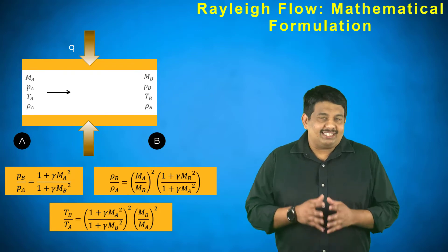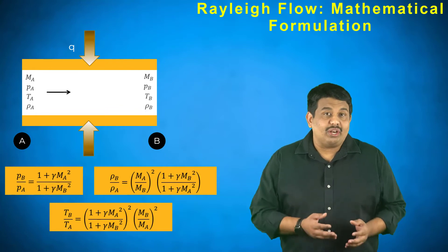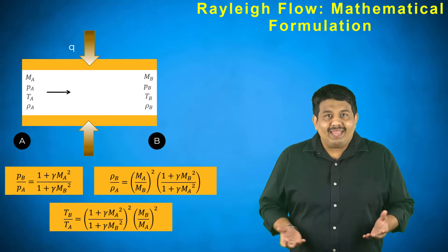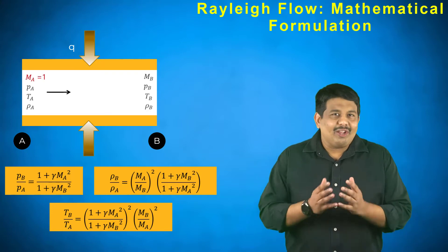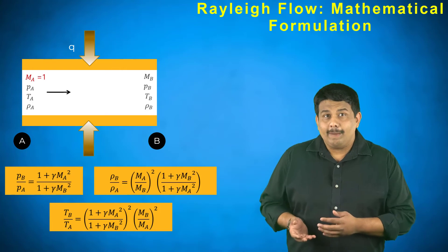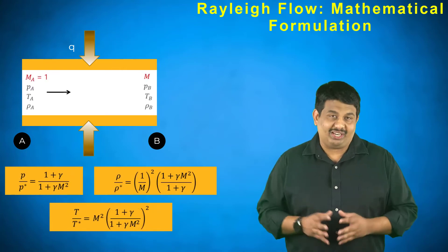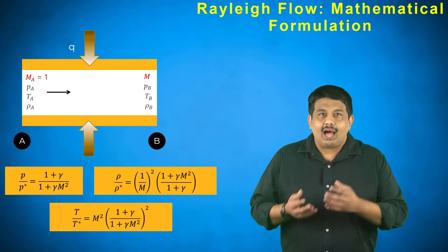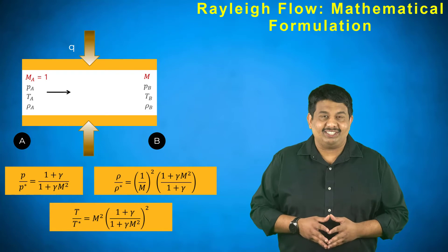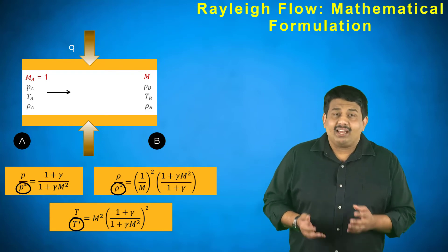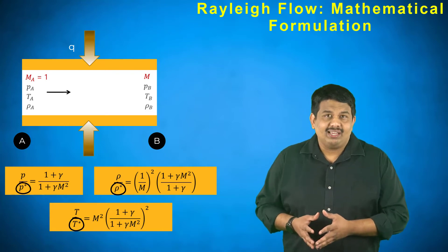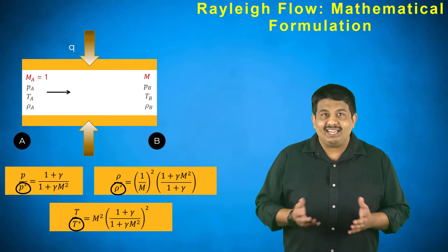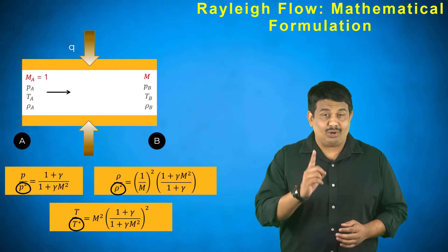These relationships are simplified by using the sonic flow properties as reference conditions. So, if MA is equal to 1, the corresponding flow properties are denoted by P star, T star, and rho star. The flow properties at any other value of M are obtained using the following relationships. Here, P star, T star, and rho star are conditions in a 1-D flow that would exist if sufficient heat were added to achieve a Mach number of 1.